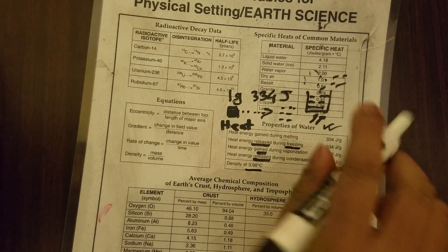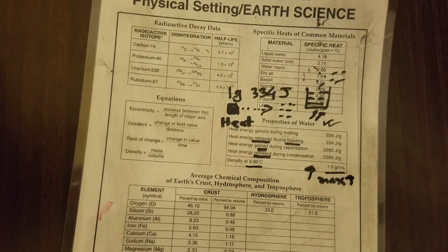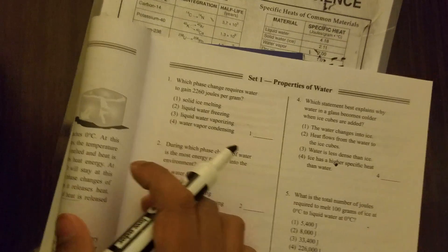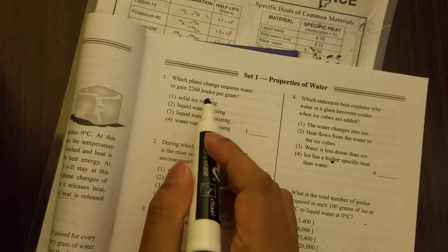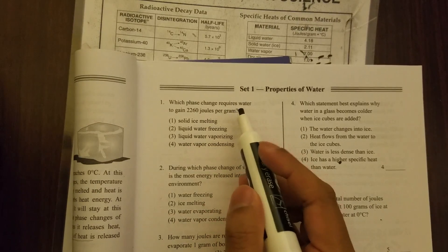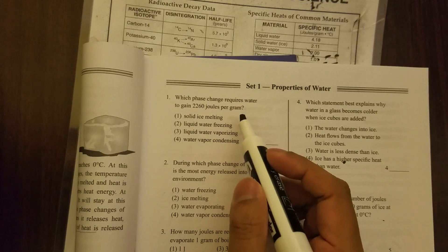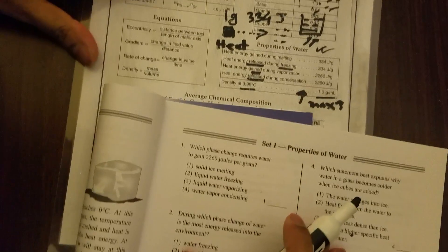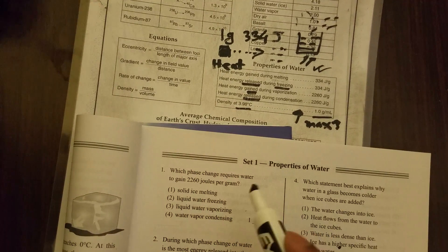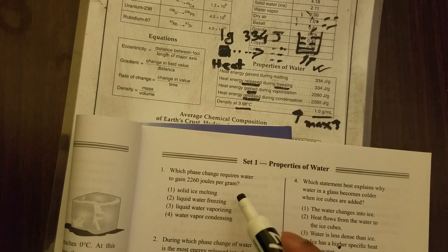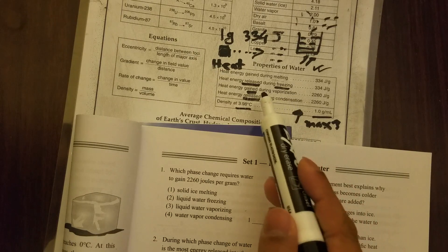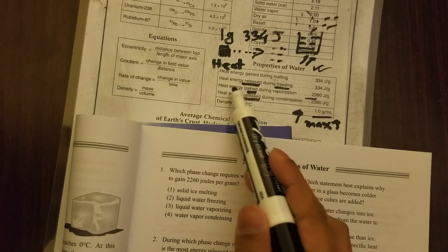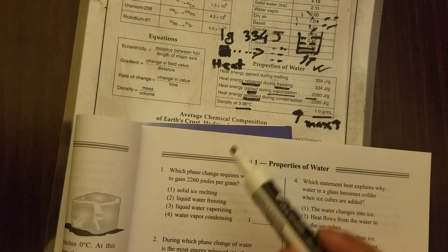I think you have basic ideas about these five lines. Now let's look at some relevant Regents questions. Question number one: which phase change requires water to gain 2260 joules per gram? If we look at the reference table, remember you're gaining energy and this is 2260, so the answer is vaporization, liquid water vaporizing.